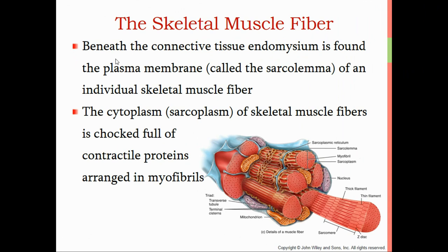Anatomy students, we'll pick up where we left off from video lesson one. Let's look at the individual muscle fiber. Beneath the connective tissue, the endomysium, is found the plasma membrane — the plasma membrane of the muscle cell. All cells have a cell or plasma membrane, and a muscle cell is no exception. This plasma membrane found underneath the endomysium, because it is specialized for muscle cells, is referred to as the sarcolemma. It is the individual plasma membrane or cell membrane of a muscle cell or muscle fiber.